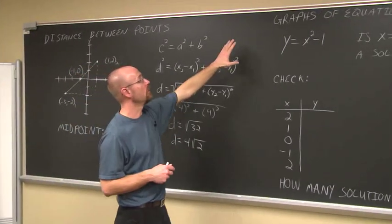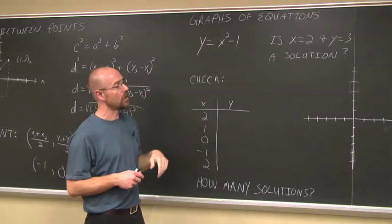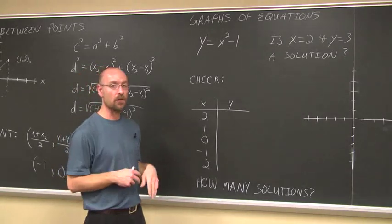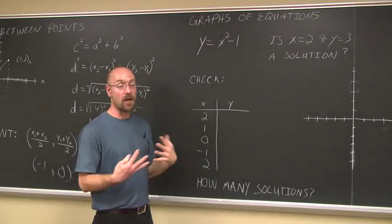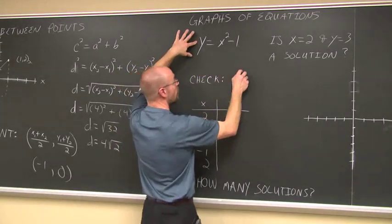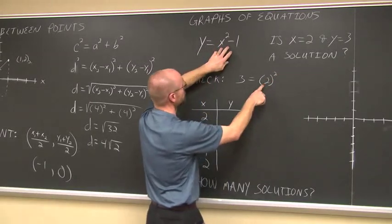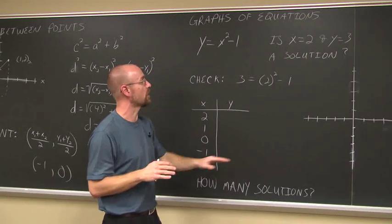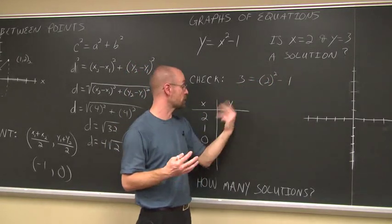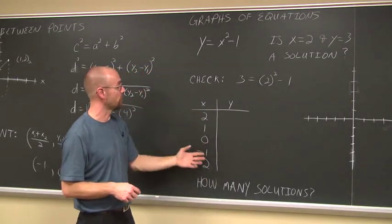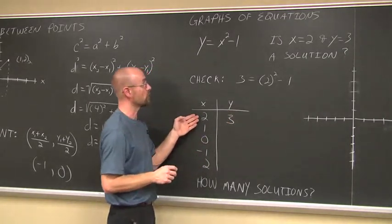Let's look at how graphs of equations work on a coordinate system. Take the example y = x² - 1 — this is a parabola. We have a question: is x = 2, y = 3 a solution? We check by substituting: 3 = (2)² - 1 = 4 - 1 = 3. That's a true statement, so yes, (2, 3) is a solution. We can build a table of values: when x = 2, y = 3.